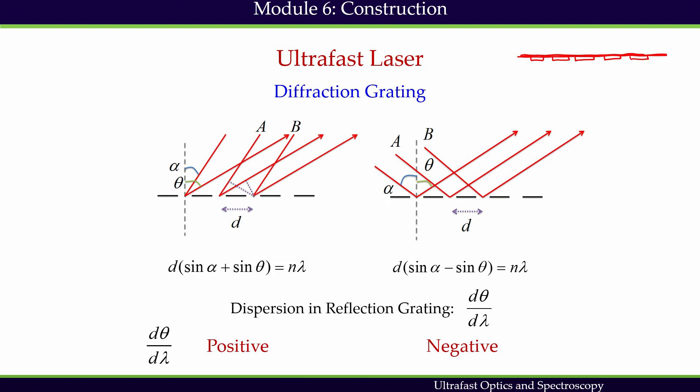Similar to a prism, a diffraction grating disperses light composed of different wavelengths into components by wavelength. Diffraction gratings are of two types: transmission grating and reflection grating. Since reflection gratings find numerous applications in ultrafast laser systems, we shall briefly discuss the dispersion of a reflecting grating. There are two different configurations, differing by how the incident beam and diffracted beam are oriented with respect to the surface normal.